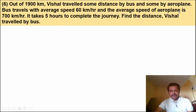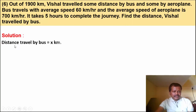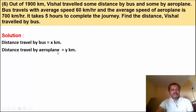The aeroplane speed is 700 km per hour and total journey time is 5 hours. Let distance travelled by bus be x km and distance travelled by aeroplane be y km.